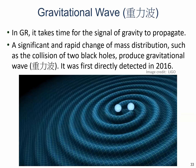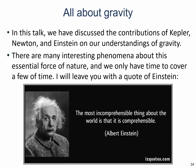Another prediction of general relativity is gravitational waves, because it takes time for the signal of gravity to propagate. If there is a very significant and rapid change of mass distribution — for example, generated by the collision of two black holes — those ripples of space-time produce gravitational waves, and they were first detected in 2016. In this talk, we have discussed the contributions of Kepler, Newton, and also Einstein to our understanding of gravity.